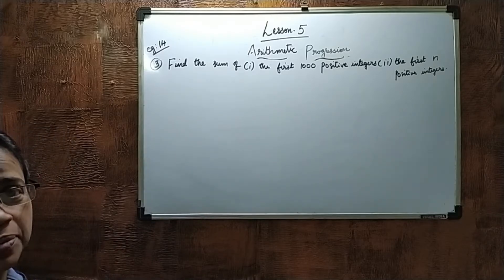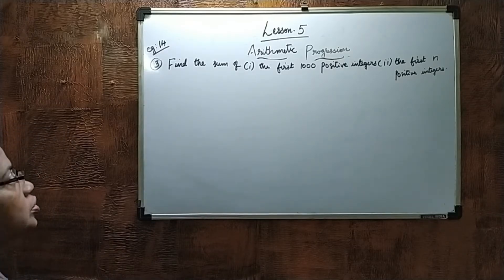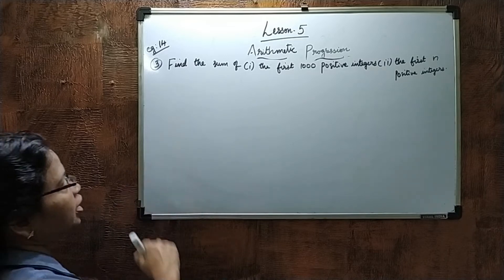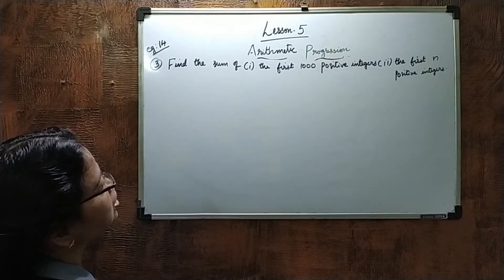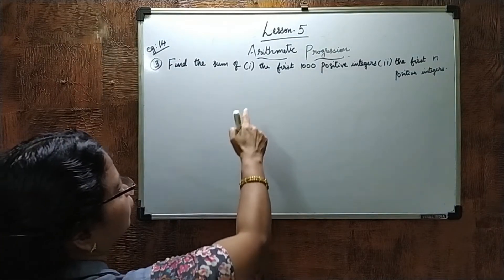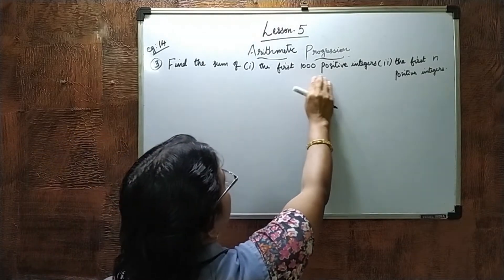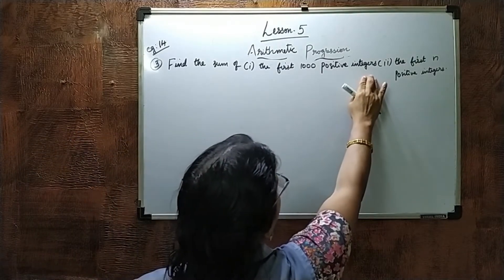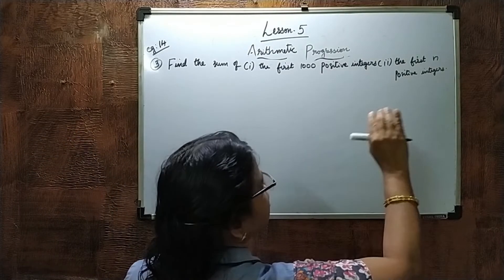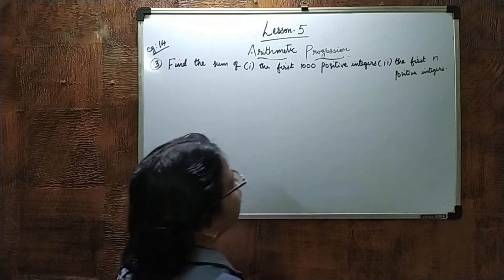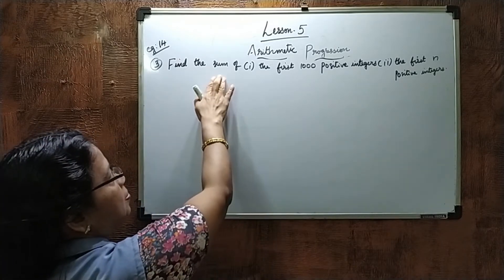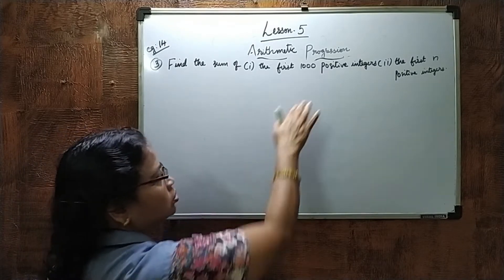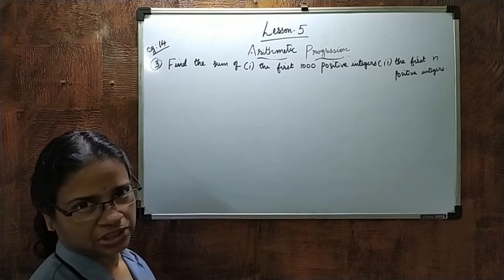We will do example number 14 in the textbook. You can write question number 3. Find the sum of: first, the first 1000 positive integers, and second, the first n positive integers.